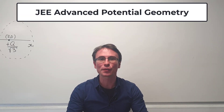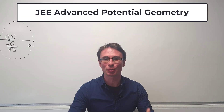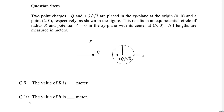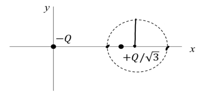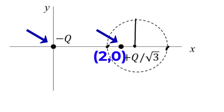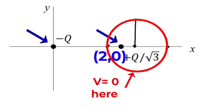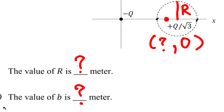Let's have a look at this question on electric fields and geometry from the GE Advanced. It involves two point charges — one placed at the origin and the other at a coordinate of (2, 0). Together they form an equipotential circle of radius r. What we need to find out is the radius of the circle and the point at which it is centered.